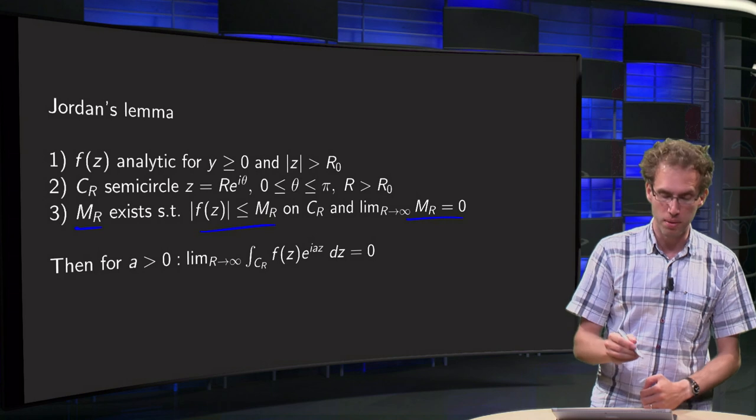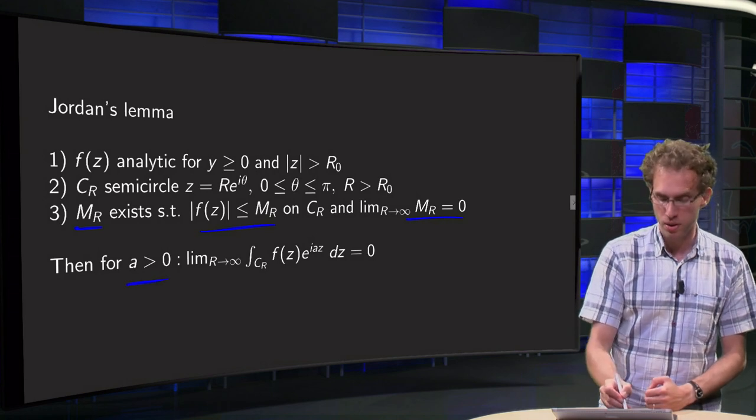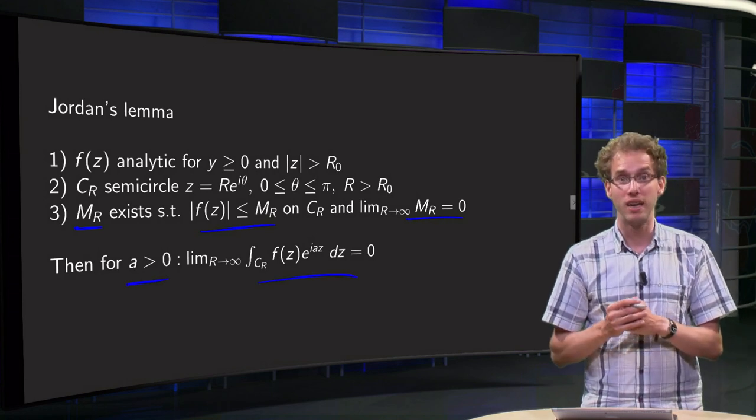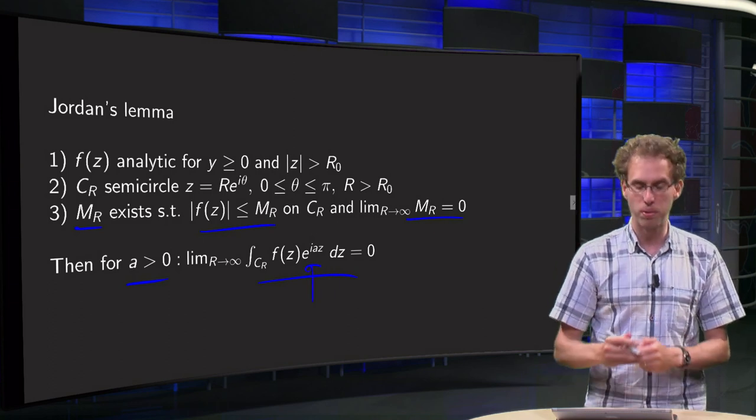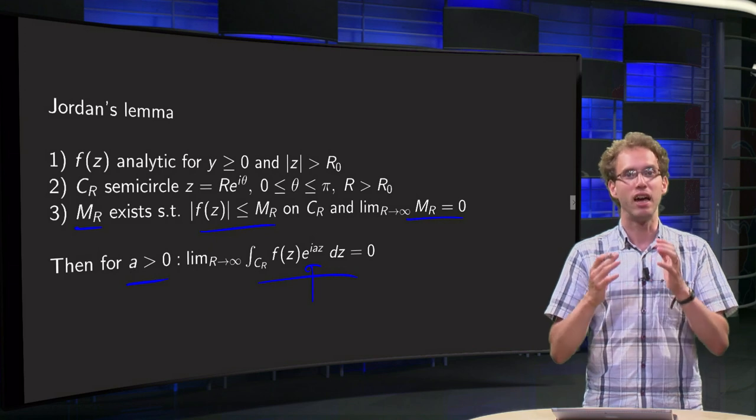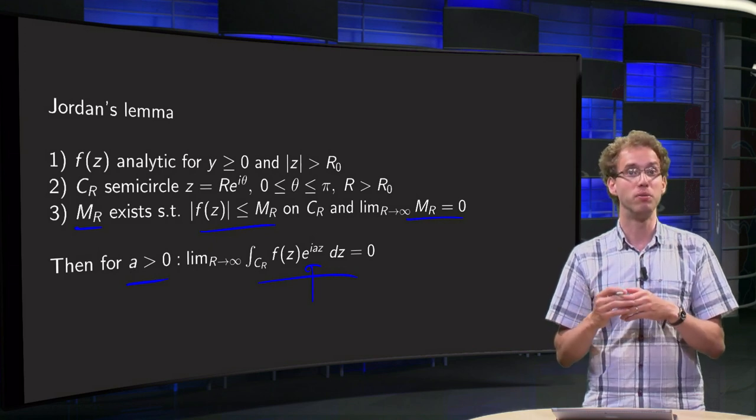Because the lemma says that for a bigger than zero, your integral will be equal to zero. And that's due to this additional factor e to the power iaz. If you wouldn't have that, then it wouldn't be valid.